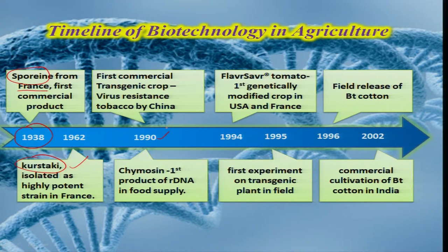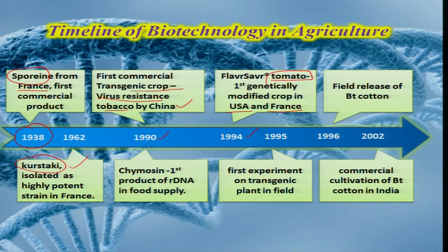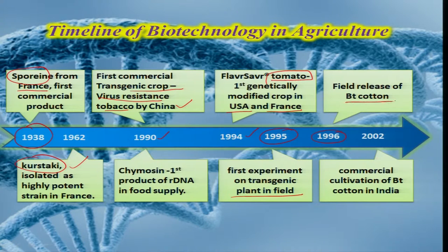In 1990, the first commercial transgenic crop with virus resistance in tobacco was developed by China. In 1994, a genetically modified tomato crop first came into existence in the USA and France. In 1995, clearance was granted to grow such genetically modified crops in the field, marking the beginning of field experimentation. 1996 was a major year when the USA started using BT cotton on a commercial scale, and in 2002, India also adopted BT cotton for commercial production.